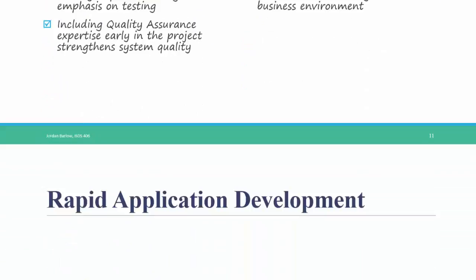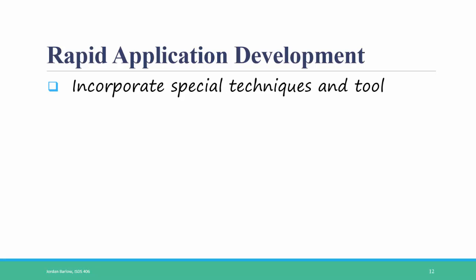Let's talk about a different type of methodology: rapid application development. Rapid application development incorporates some special techniques and tools in order to overcome the weakness of the waterfall methods that take a long time. First, there's CASE tools — CASE stands for computer-aided software engineering. These are types of software packages that automate some or all of the development process, such as Visible Analyst. CASE tools take diagrams and other sources that you use during the analysis phase and turn them into design elements, and can also take design elements and turn them into coding elements. For example, using the design that you create in a CASE tool, some CASE tools will output a set of code or generic code that can be used in the implementation phase.